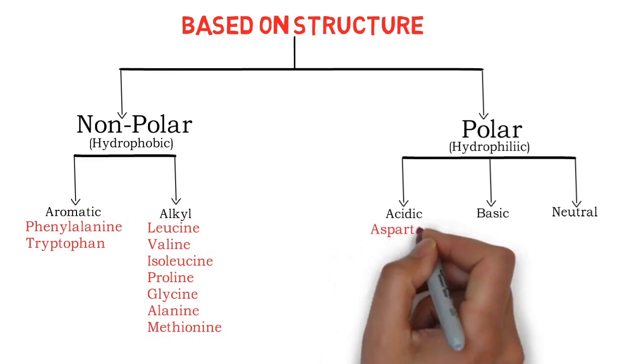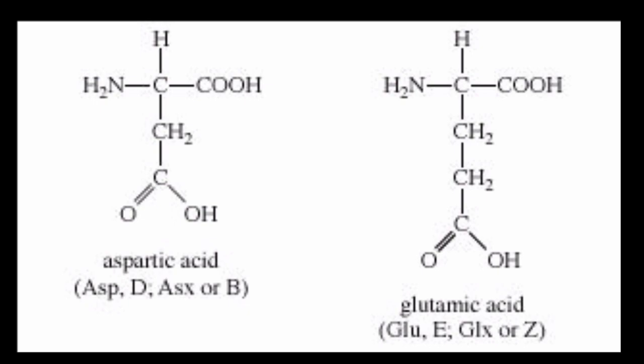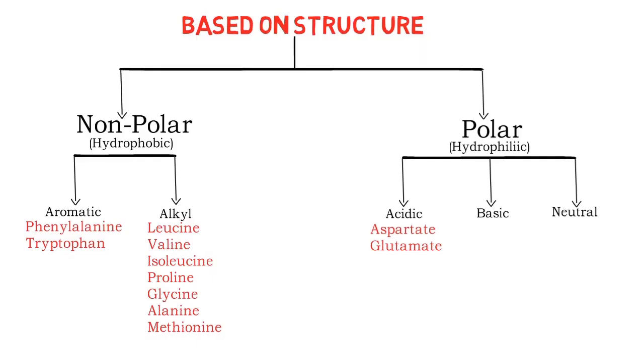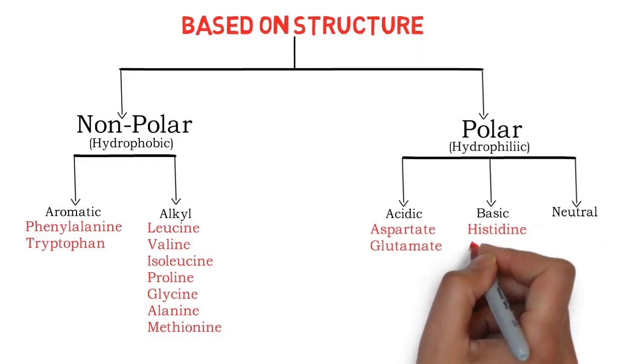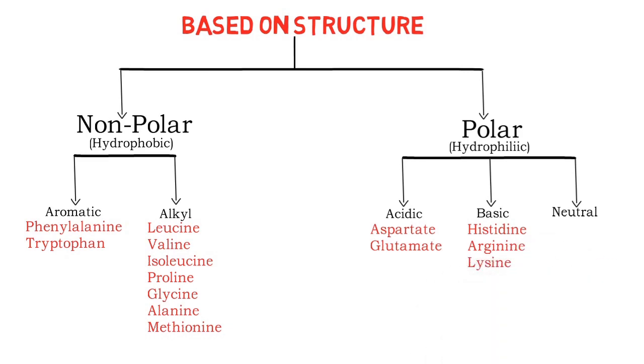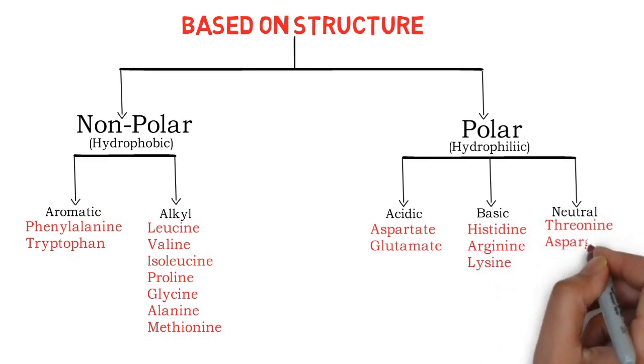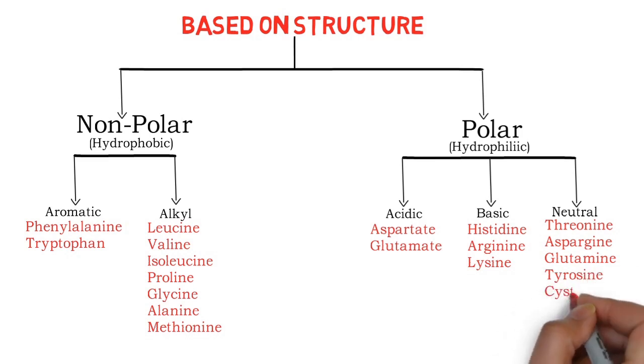Acidic amino acids are aspartic acid and glutamic acid. Basic amino acids are histidine, arginine, and lysine. Neutral amino acids are threonine, asparagine, glutamine, tyrosine, cysteine, and serine.